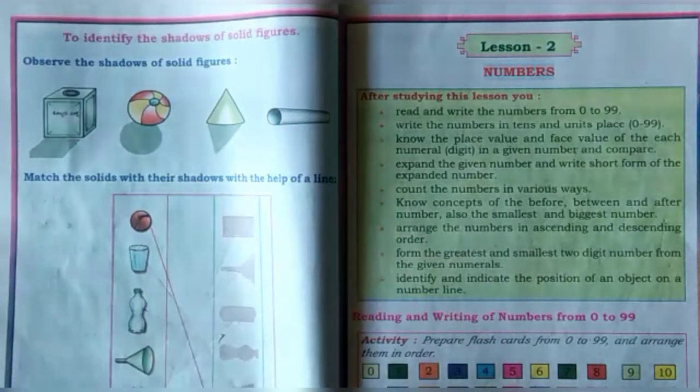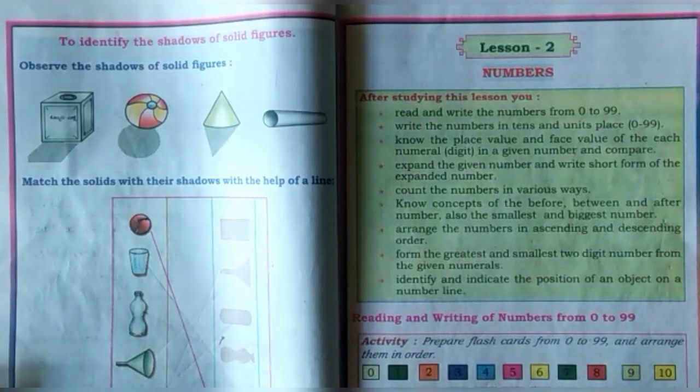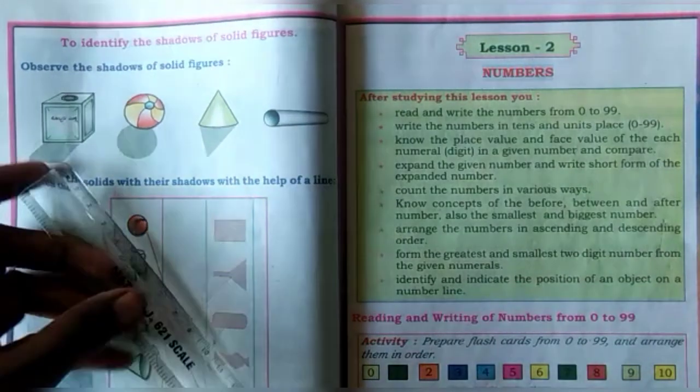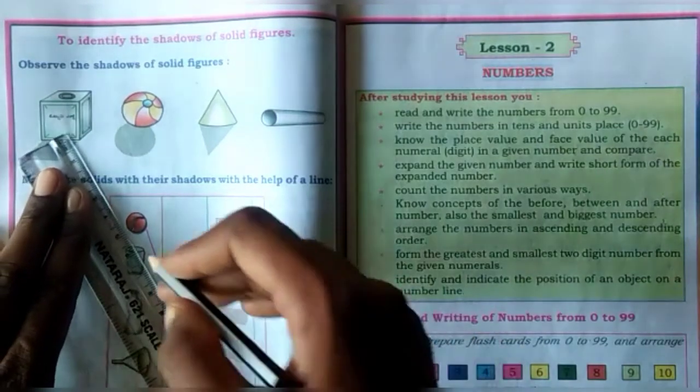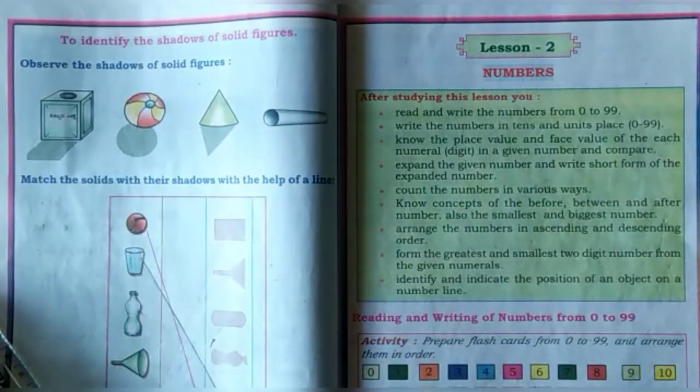You have to correctly match the object shadows. First one, ball, already they can join it. Next, glass. Take a scale and correctly show the glass shadow. Next, water bottle.